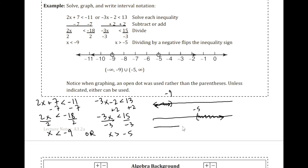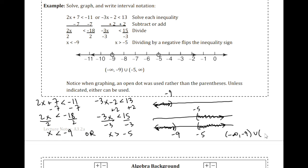To union the two sets together and bring them together, we get our combined graph. In interval notation, that's going to be negative infinity to negative 9, unioned with negative 5 to infinity. So we see both the graph and the interval notation.